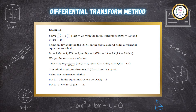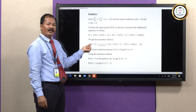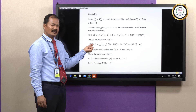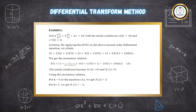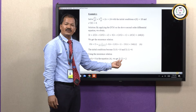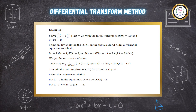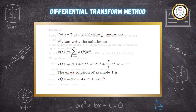Using the recurrence relation, substituting k equals 0 in equation A, we get X of 2 equals 1 upon 1 times 2, times [minus 3 times X of 1 minus 2 times X of 0 plus 24 times delta of 0], giving capital X of 2 equals 2. Substituting k equals 1, we get X of 3 equals minus 2. Similarly, substituting k equals 2, we get capital X of 4 equals 7 upon 6, and so on.